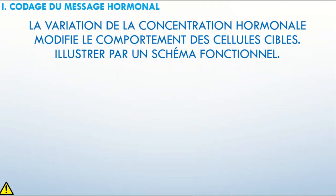La question demandée est d'illustrer par un schéma fonctionnel ce que je viens d'expliquer. On nous dit que la variation de la concentration hormonale modifie le comportement des cellules cibles — illustrer par un schéma fonctionnel. Un schéma fonctionnel, c'est un schéma annoté avec des flèches qui montrent ce qui se passe au niveau de ce mécanisme.